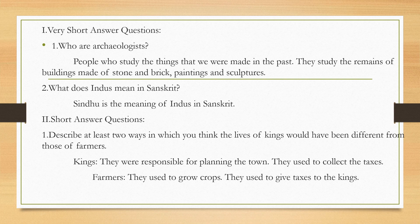Second: short answer questions. First question — describe at least two ways in which the lives of kings would have been different from those of farmers. Kings: they were responsible for planning the town and they used to collect taxes. Farmers: they used to grow crops and they used to give taxes to the kings.